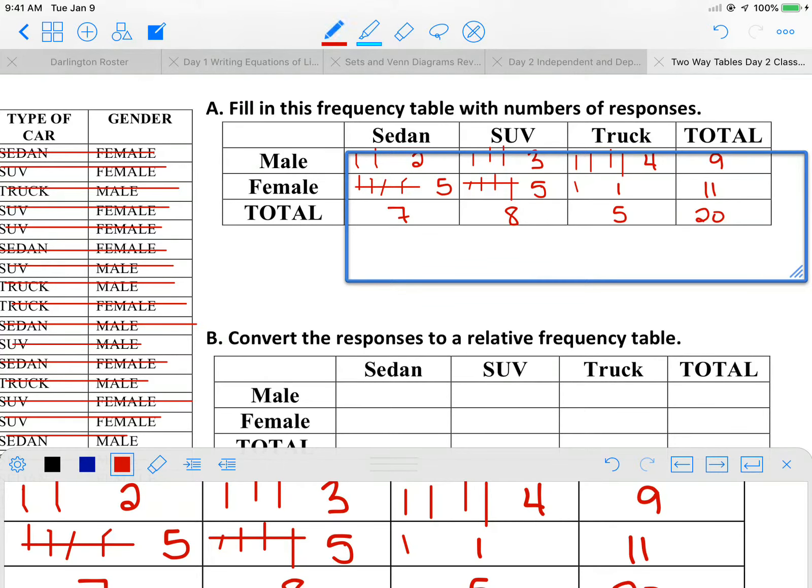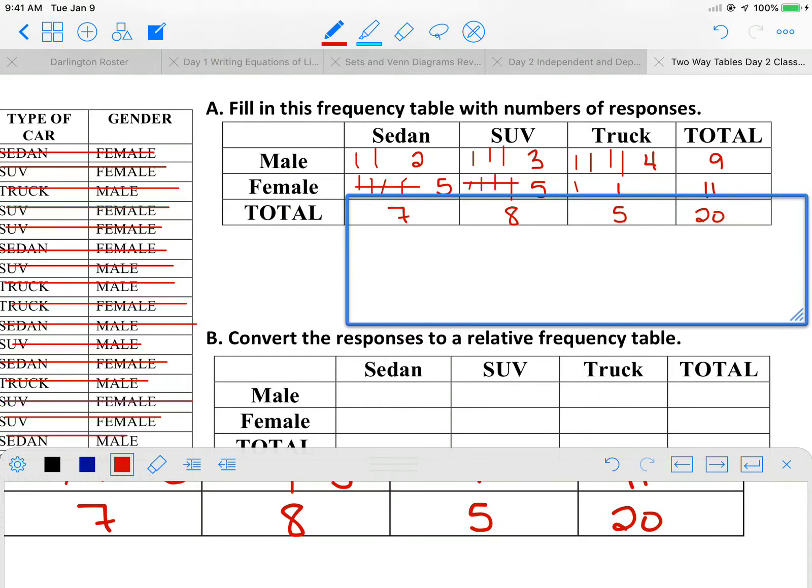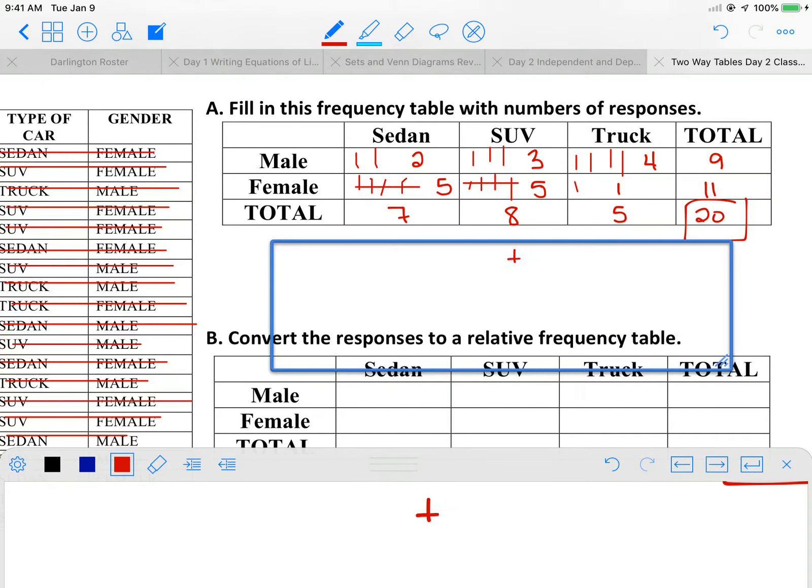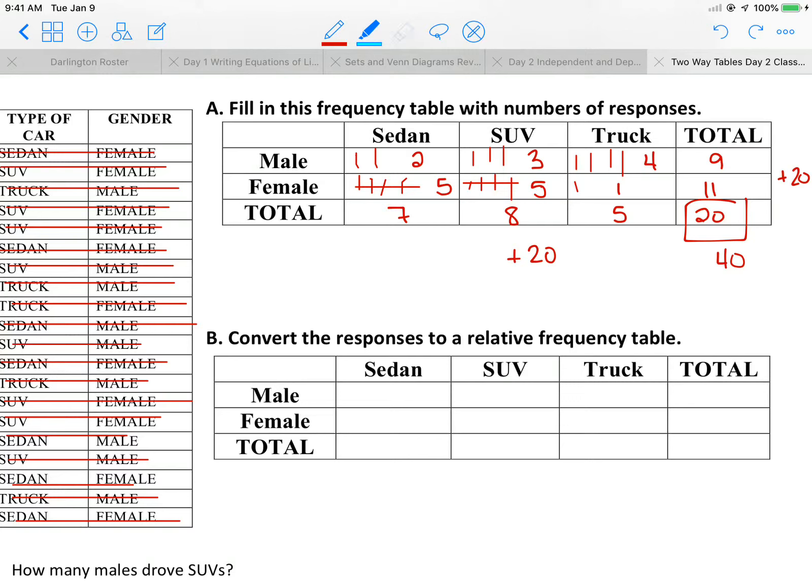So a couple of us on the quiz, for some reason, instead of getting 20, which is our people surveyed, we took the 20 that was here and we added it to the 20 that was over here and we ended up with 40. So guys, just remember that each column is its own total. So our bottom piece here is a total and then our top piece, our column there is a total. So it's not 20 plus 20 to make 40, it's just 20 people that were surveyed.